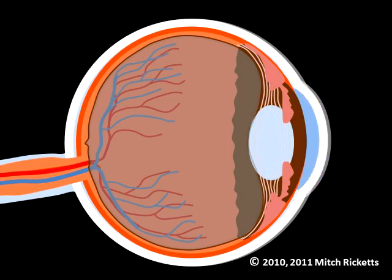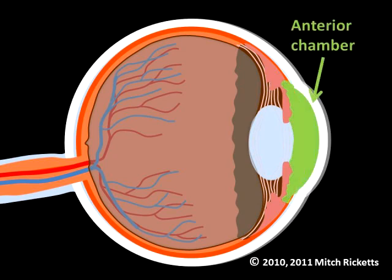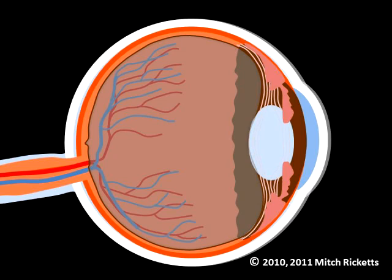That clear, nourishing fluid is called aqueous humor, and it is located in the anterior chamber, a cavity directly behind the cornea. Aqueous humor provides oxygen and nutrients to structures near the front of the eye. Aqueous humor is produced by the ciliary body, which encircles the iris.